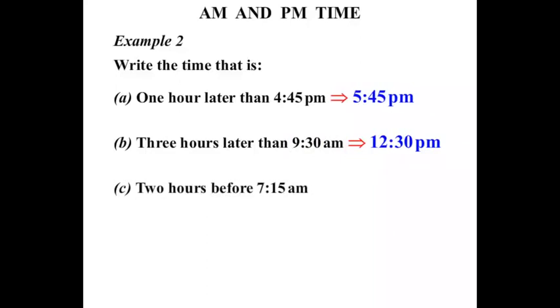What about two hours before 7:15 AM? Well two hours earlier than that would be 5:15 and it would still be AM.